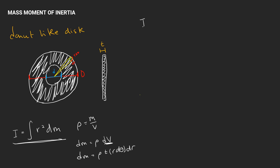We're calculating the mass moment of inertia about the center of mass, which is at the center point. The integral is: rho t r cubed dtheta dr — note we multiply dm by r squared, giving r cubed. We first integrate with respect to theta from 0 to 2 pi, then integrate r from lowercase d over 2 to uppercase D over 2. This ensures r only spans from the inner radius to the outer radius, excluding the hole. Since there is no theta term, integrating over theta simply gives a factor of 2 pi.